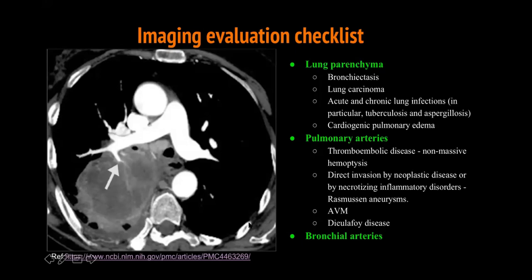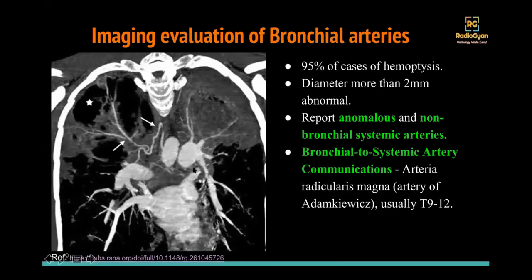Rasmussen's aneurysm — although not a common cause of hemorrhage, it's a named terminology that appears in exams. It is a pulmonary artery pseudoaneurysm which can be seen in tuberculosis and can cause hemorrhage. Another named pathology is Dieulafoy's disease — hypertrophy of submucosal vessels. You don't see it on imaging; it's more of a clinical diagnosis.